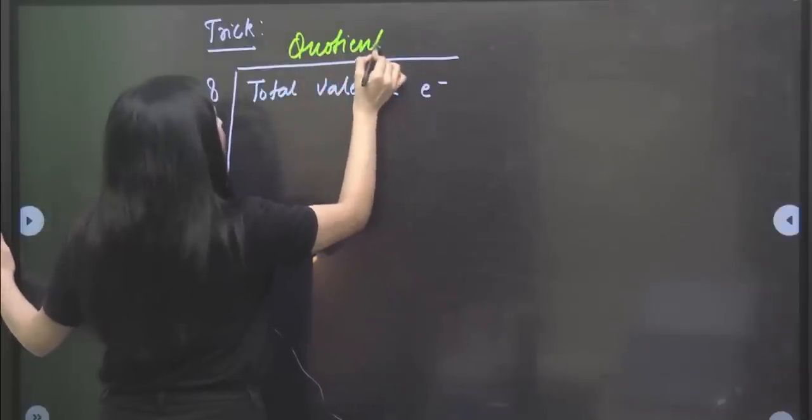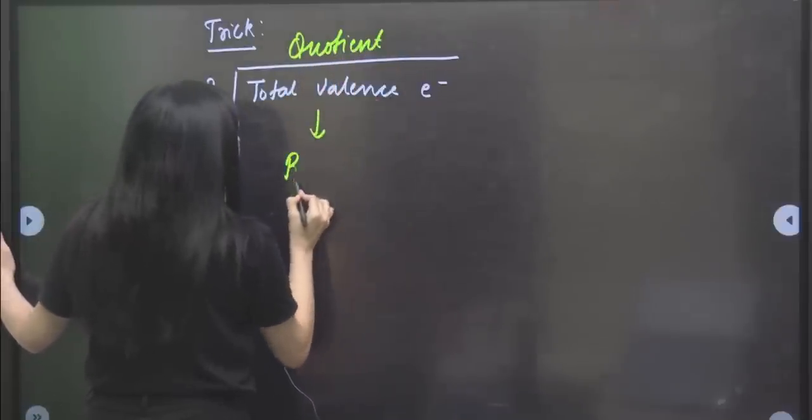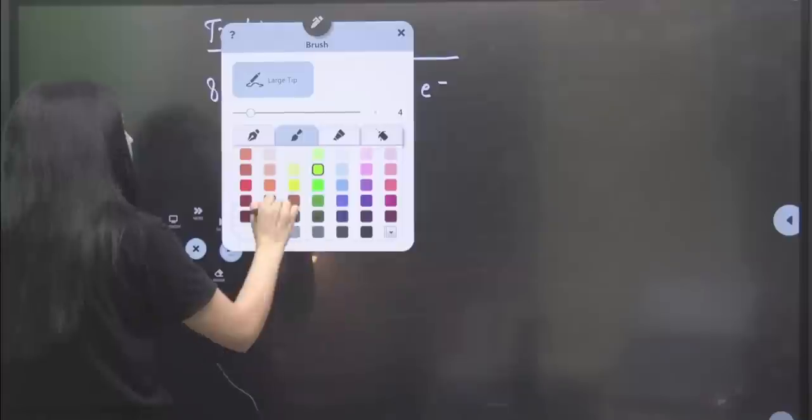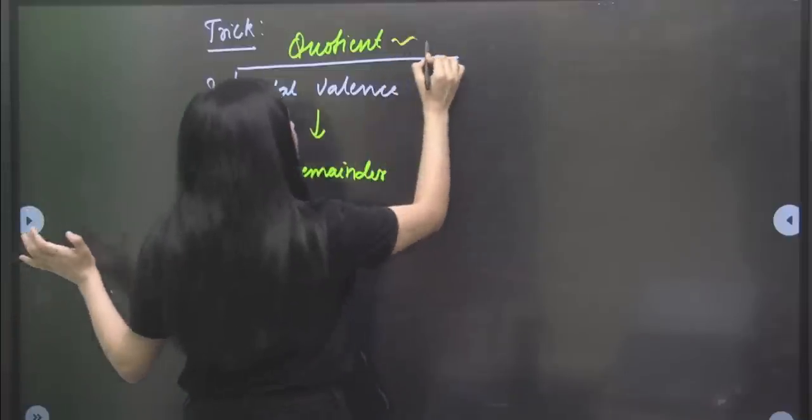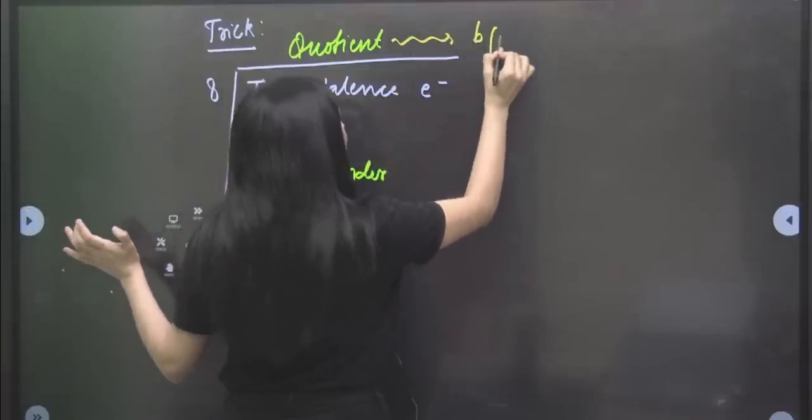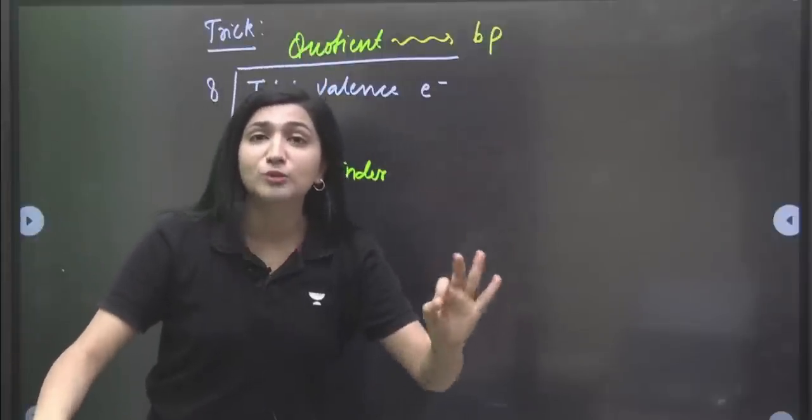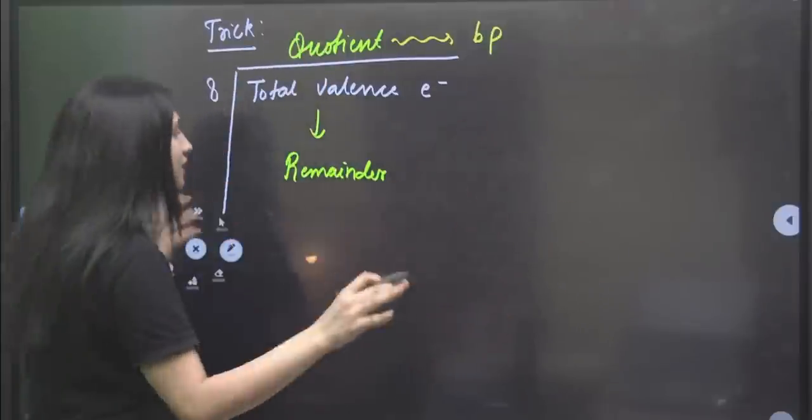And similarly, it may be that after dividing it, you have a remainder also. You have to be careful that whatever quotient is coming here, this quotient value is your number of bond pairs. That is, this quotient value is telling you how many bond pairs are in that molecule.